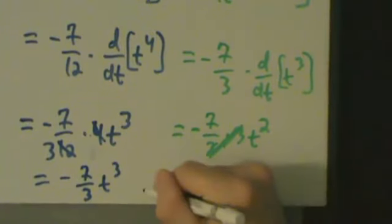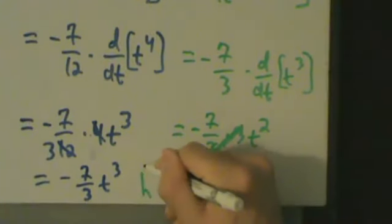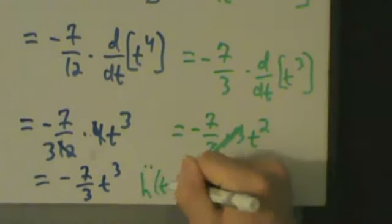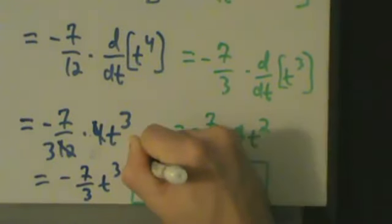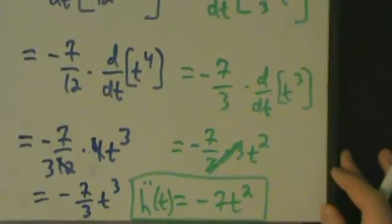And that's our answer. ḧ(t) equals -7t². That's example two.